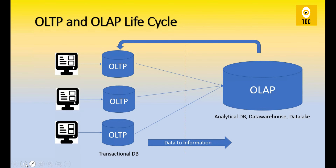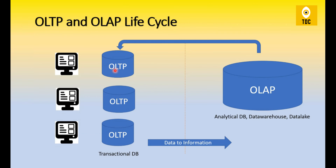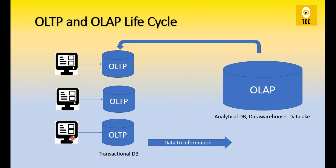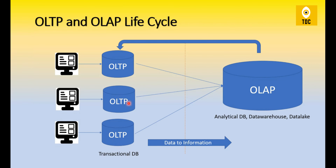Now let's see the OLTP and OLAP lifecycle — how these two are connected and how they work. In case of OLTP, it is usually a transactional database. In case of OLAP, it will be an analytical database, data warehouse, or a data lake. OLTP continuously receives transactions from applications, devices, or any kind of systems.